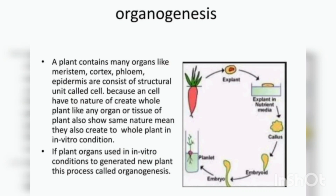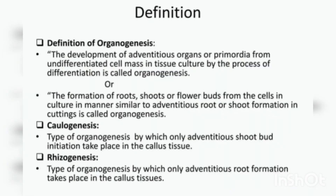Plants contain organs like meristem, cortex, phloem, and epidermis — they all consist of structural cells. The cells have the nature to create a whole plant. That is the basic principle of tissue culture, and we use these tissues to create a whole new plant.